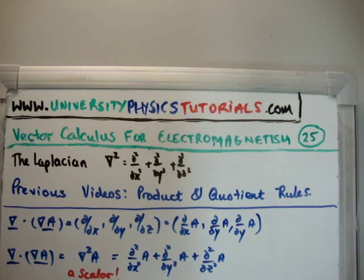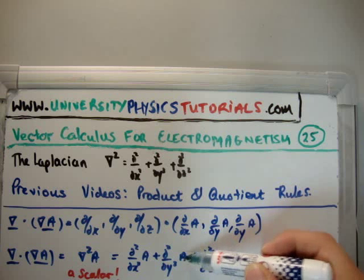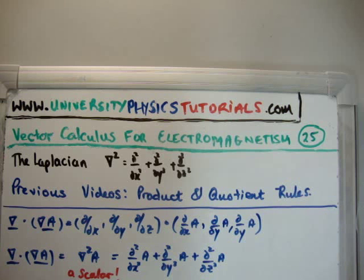So it's going to be del squared del x squared on A plus del squared del y squared on A plus del squared del z squared on A. And the important point to note is that it is a scalar.